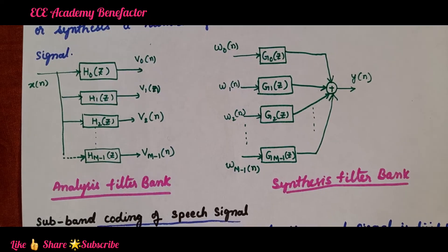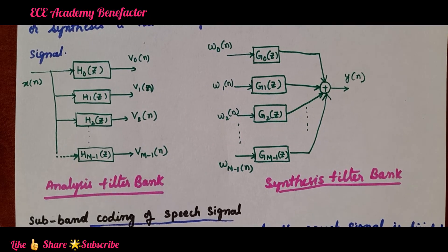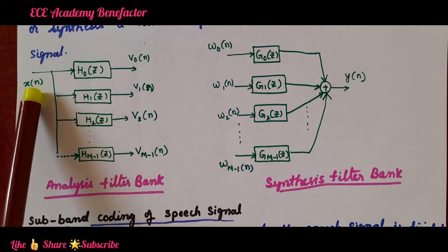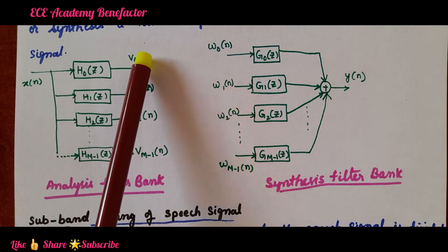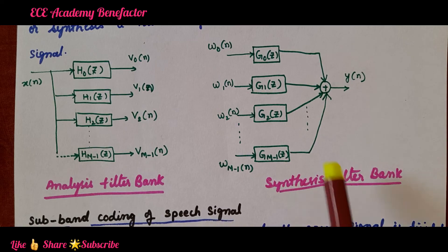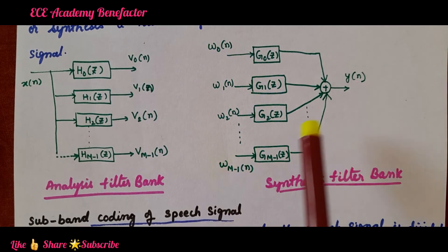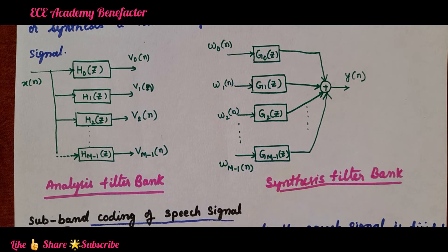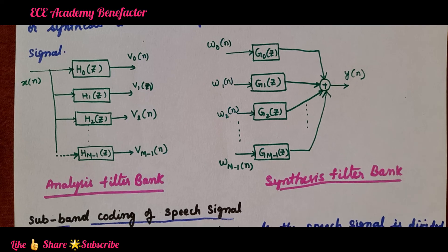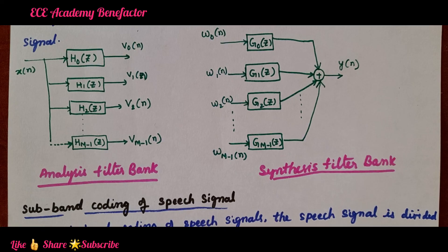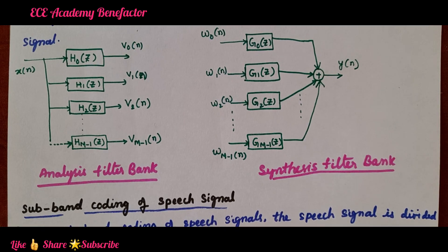This is all about analysis filter bank and synthesis filter bank — one of the applications of multirate DSP. The analysis filter bank converts an input signal into a set of sub band signals, while the synthesis filter bank combines sub band signals into a composite signal. This finds its application in sub band coding, which will be covered in the next class. I hope the class is clear. If you have any doubts, you can post in the comment section. Thank you and good luck, students.